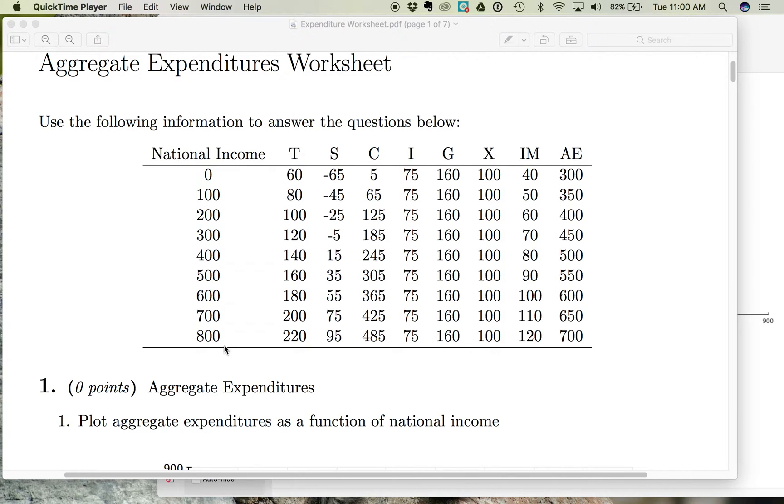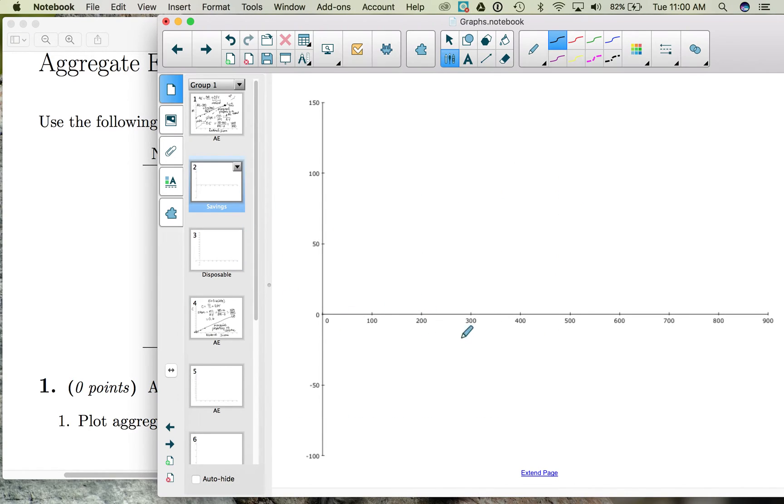As income increases, the amount we put into savings increases. We go from pulling money out to putting money in. So let's plot this information on a graph. So again, here we have national income on the horizontal, and on the vertical now we have savings.